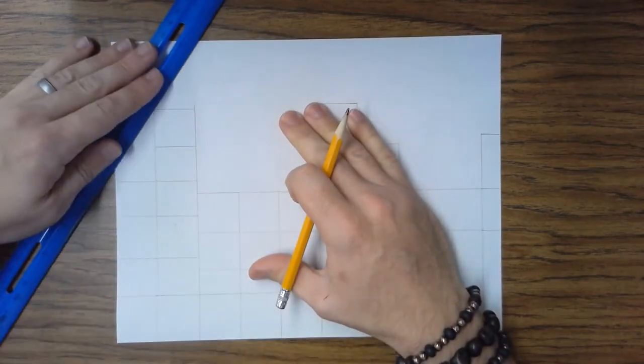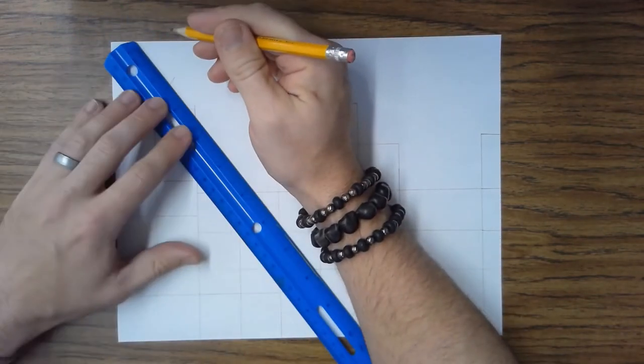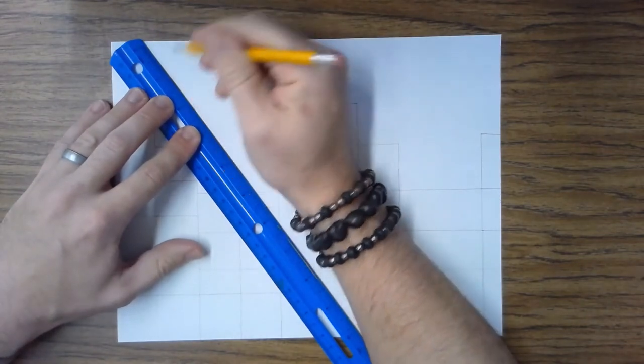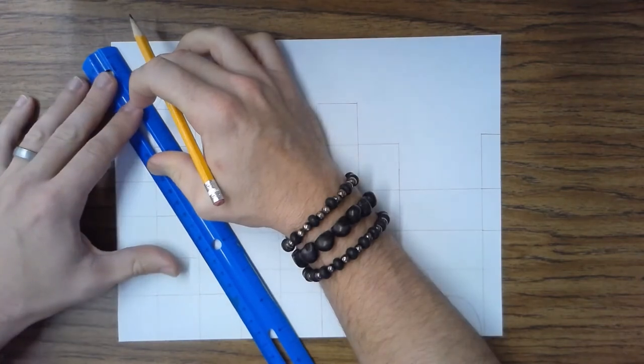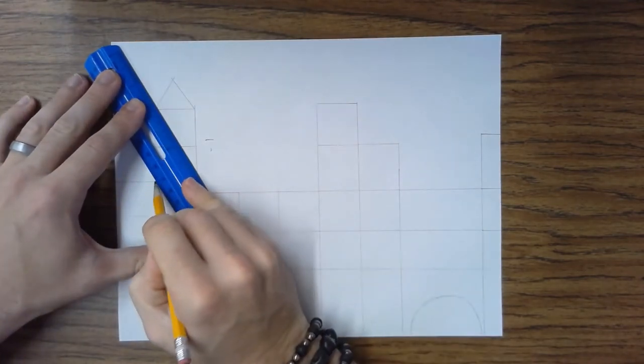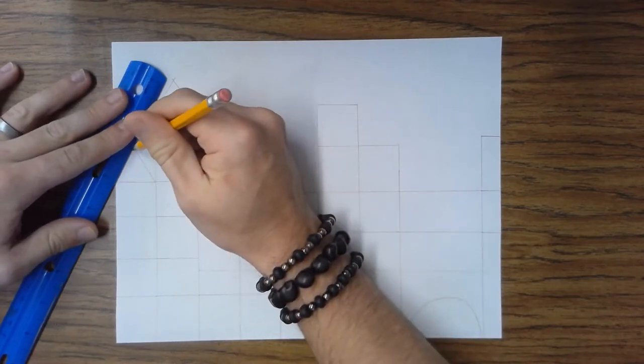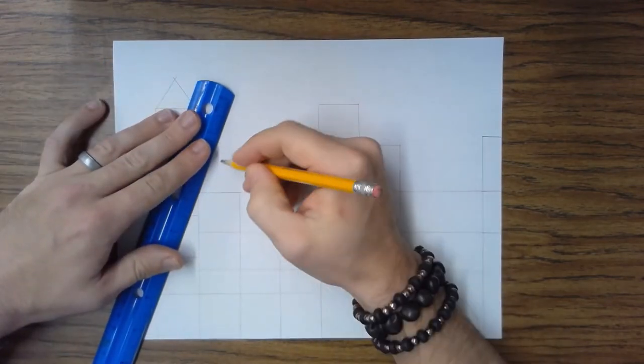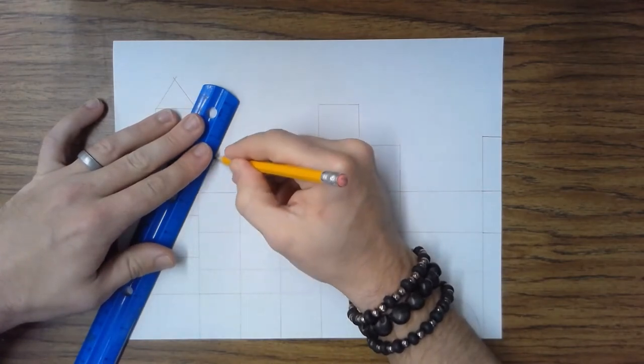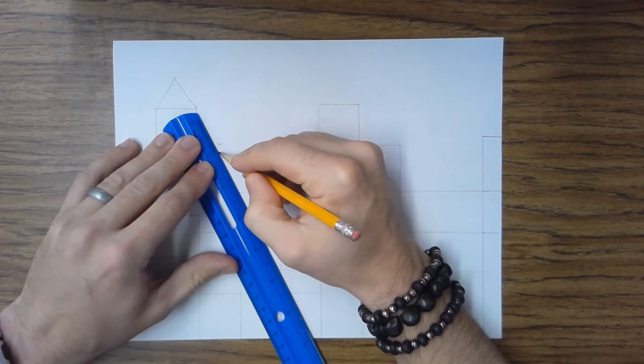And maybe take our straight edge and add a few pointy roofs. You might want to make yours come to a point better than I did there. I kind of missed a little bit. There's a better one. Just adding some triangles in. Add the roof to our castle.